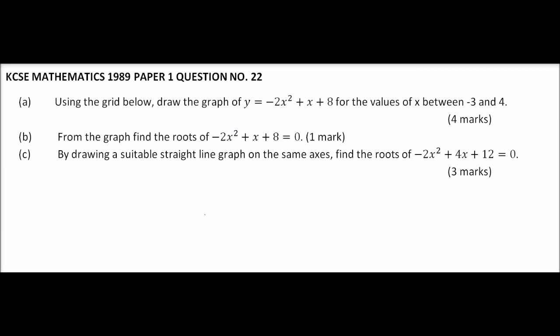Welcome to this KCSE Mathematics 1989 Paper 1 Question 22 on quadratic graphs. We are told to use a grid to draw the graph of y = -2x² + x + 8 for values of x between -3 and 4. Part B asks us to find the roots of -2x² + x + 8 = 0, and Part C asks us to find the roots of -2x² + 4x + 12 = 0 by drawing a suitable straight line on the same axes.